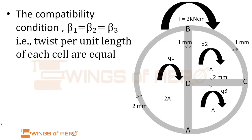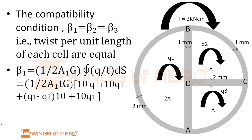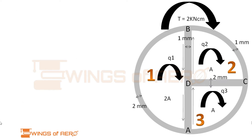Recalling the compatibility condition for any closed multiple-cell section, β1 = β2 = β3, since we have 3 sections. The twist per unit length of each cell are equal. Recalling the formula: β1 = (1/2A1·G) × ∮(Q/t) ds.